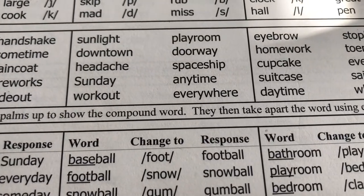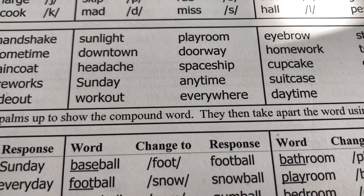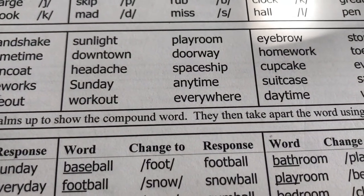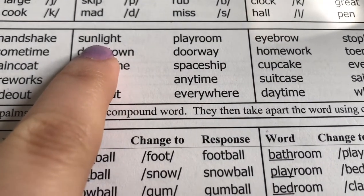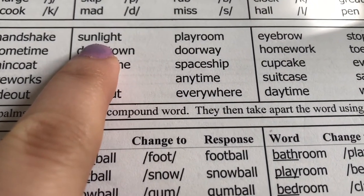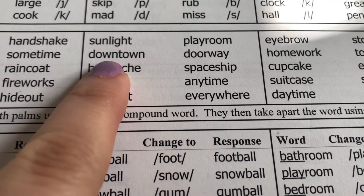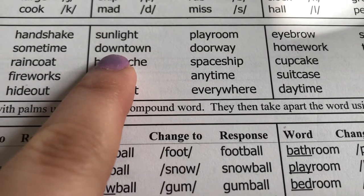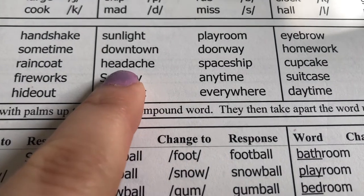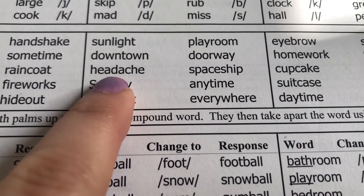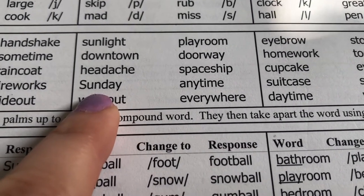Now we are moving on to segmenting words. I'm going to say the compound word, the student would repeat the word and then segment it into two words. Sunlight — so they would repeat sunlight — Sun. Light. Downtown — Downtown. Headache. Headache. Sunday — Sun. Day.